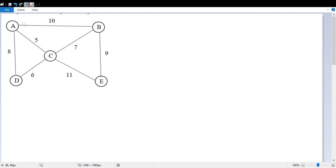If we look at this graph here with nodes A, B, C, D, and E, then these numbers here represent the cost of making these certain connections.